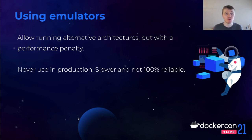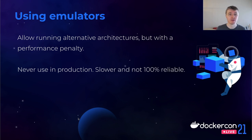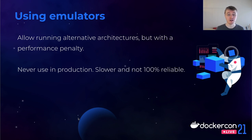Some cases you do want to run images that your machine doesn't natively support — for example, the image does not exist, it's very hard to rebuild, or you just want to run a test. For that case, we support software emulation. There's a piece of software that converts your instructions from one architecture to another. Of course, this comes with a performance penalty, so you cannot use this in production — it is slower and it might give you some errors sometimes as well.